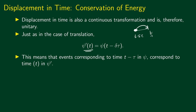So we can write psi prime of t, the transformed wave function at time t, is equal to psi of t minus delta tau, if you are translating the system in time by an amount delta tau. This means that the same events that correspond to t minus delta tau in psi now correspond to time t in psi prime, because we are simply translating the system from this point of time to another point of time.